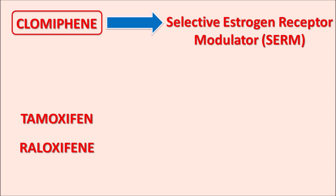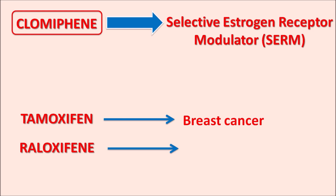Although these drugs belong to the same SERM category, they have different clinical indications. Tamoxifen is indicated for the treatment of estrogen-dependent breast cancer, acting as an estrogen receptor antagonist to inhibit estrogenic activity at breast tissue. Raloxifene is indicated for the treatment of osteoporosis; because of its estrogenic activity, it reduces demineralization of bones.